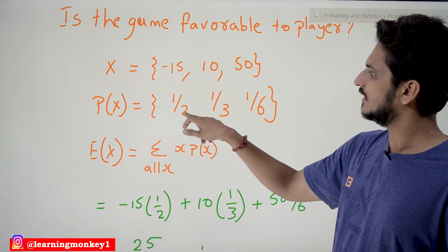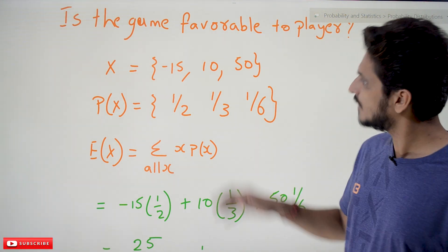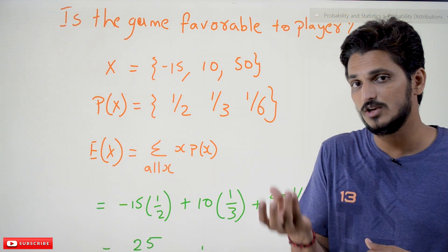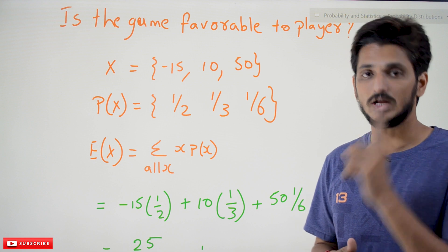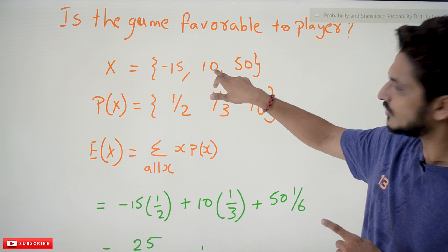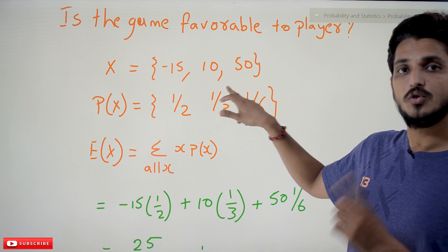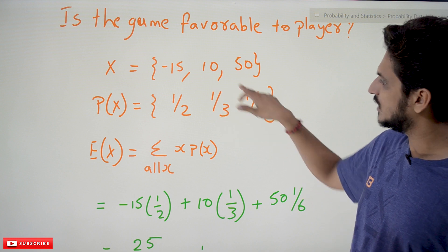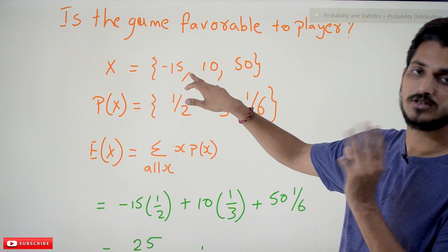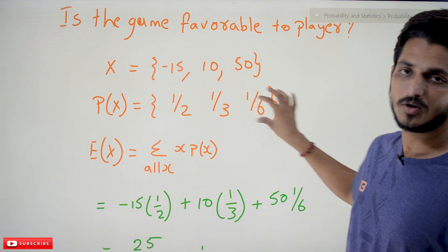The random variable X takes values minus 15, 10, and 50. The probability of getting 50 (dice shows 5) is 1/6. The probability of getting 10 (dice shows 2 or 4) is 2/6, which is 1/3. The probability of paying 15 (dice shows 1, 3, or 6) is 3/6, which is 1/2.